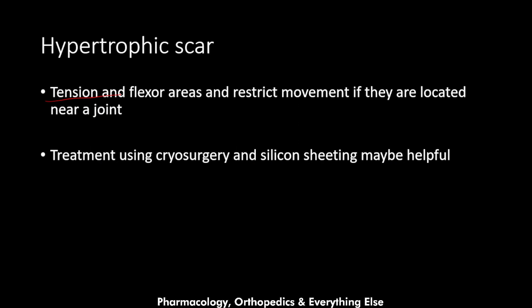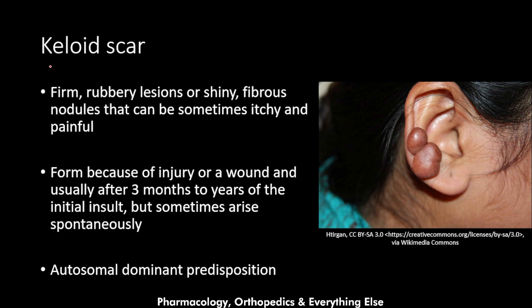The hypertrophic scar forms in tension and flexor areas and restricts movement if located near a joint — joint movement will be restricted. Treatment using cryosurgery and silicone sheeting may be helpful, but not always.